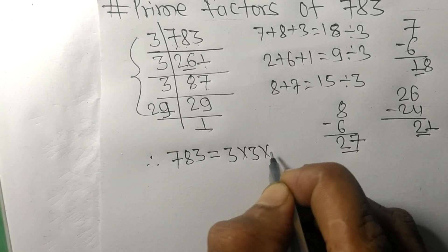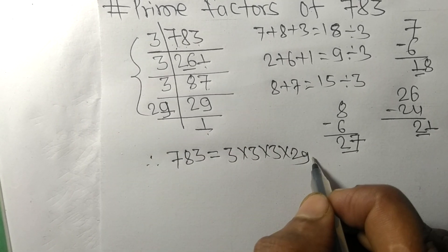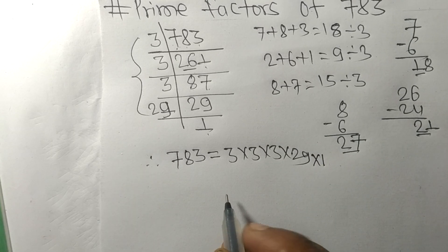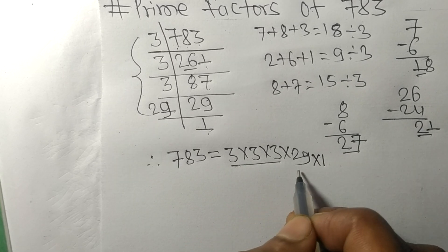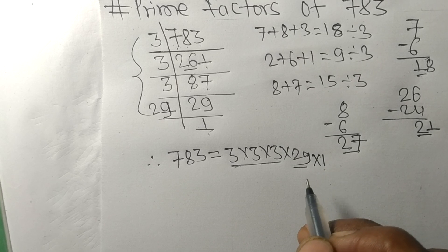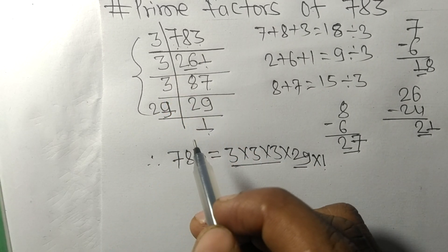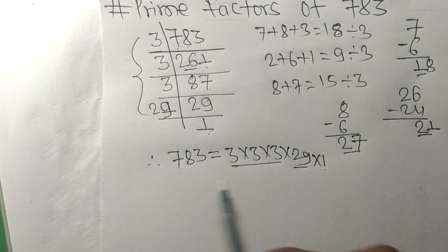So 3, 3, 3, and 29 are the prime factors of 783. So this much for today and thanks for watching.